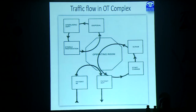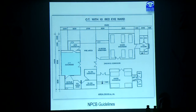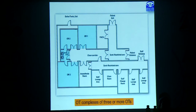This is the rough outflow of how an OT complex works: it consists of the operation room, patient in and patient out, staff change, scrub room, sterile preparation, sterile department, and disposal. There are different requirements for different hospitals. A single surgeon clinic may have a single theater with different guidelines set by the NPCB with a 10-bedded eye ward, where specifications and dimensions are also specified. For three or more OTs, structures can be modulated according to need, but minimum standard criteria must be maintained.